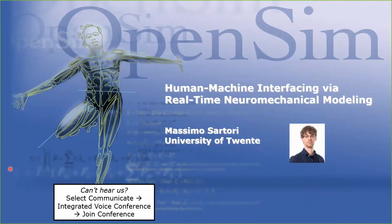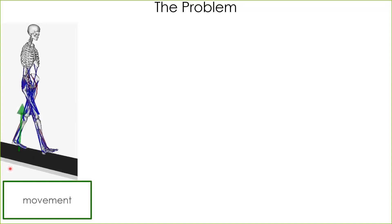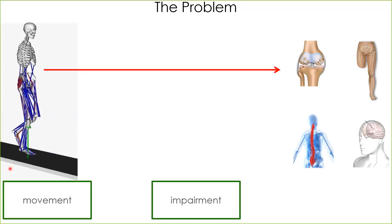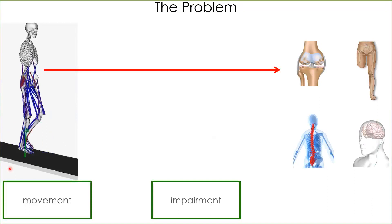Hi everyone. It's a pleasure to give this webinar today. With this presentation, I would like to give an overview on how we can record information from the human nervous system and use this information in combination with biomechanical modeling to decode the mechanics of the musculoskeletal system. I would like to show how doing this is central for interfacing the human body with wearable assistive technologies that can enhance our ability of moving.